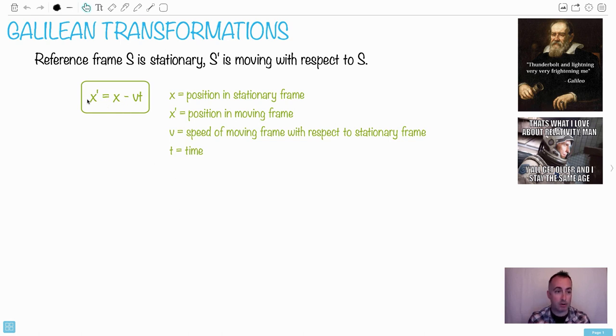We have this right here which is in your data booklet, so X prime equals X minus VT, where X is the position in the stationary frame. And let's maybe put units to it. Position, that would be in meters. We have X prime, if that's position in the moving frame, that's also in meters. So if you think about the primes, they represent moving frame things, right? Now V is going to be the speed of the moving frame with respect to the stationary frame.